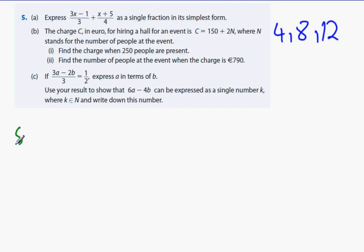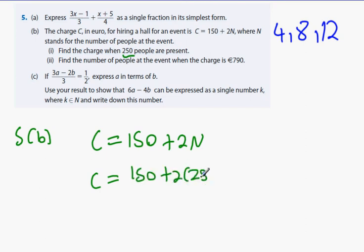Now, 5b. The charge C in euro for hiring a hall for an event is C equals 150 euro plus 2N where N stands for the number of people at the event. Find the charge when 250 people are present. How do you do that? 150 plus 2 times 250. Yeah, replace N with 250. And we get the answer is 650. Not too difficult that one.